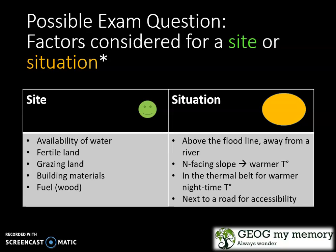Situation needs to be above the flood line and away from a river. It also needs to have a north-facing slope, which considers warmer temperatures. It needs to be in the thermal belt for warmer nighttime temperatures, and it needs to be next to a road for accessibility.